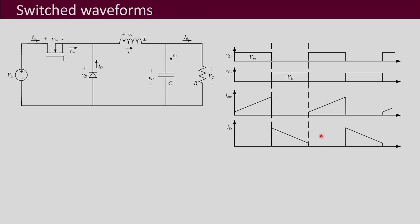Even when we assume things to be ideal, if you do an FFT analysis — that means a fast Fourier transform — of these types of waveforms, you will be seeing a lot of harmonics at high frequencies. If you were to draw the FFT, there is your fundamental component, which in this case is the DC component. Apart from that, you will have the switching frequency component, and then as you go further you will see a lot of high frequency components that may be present.